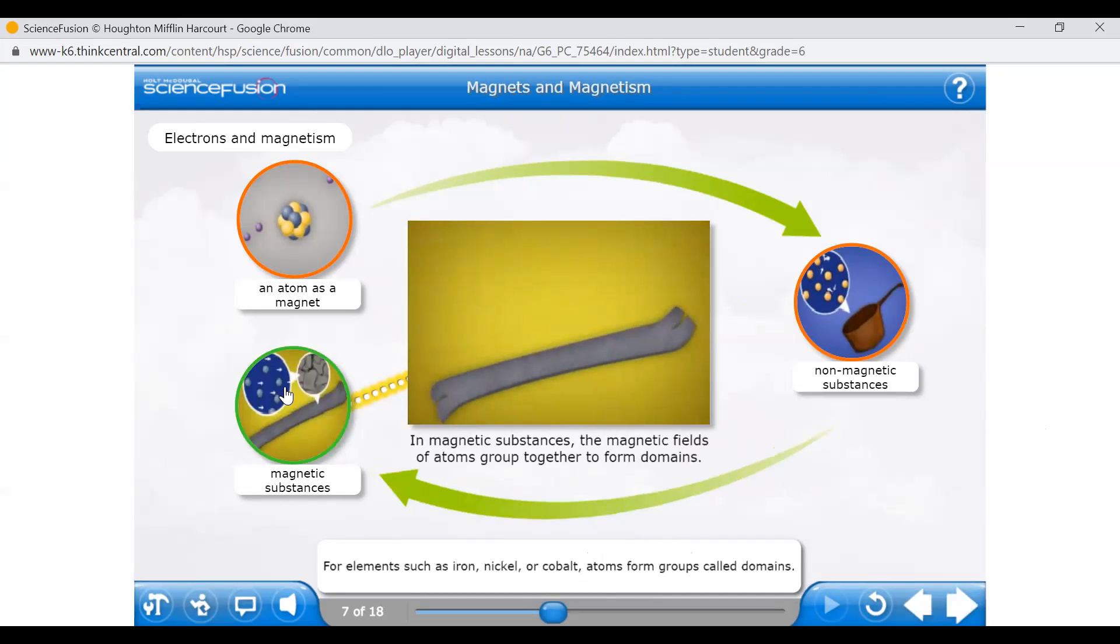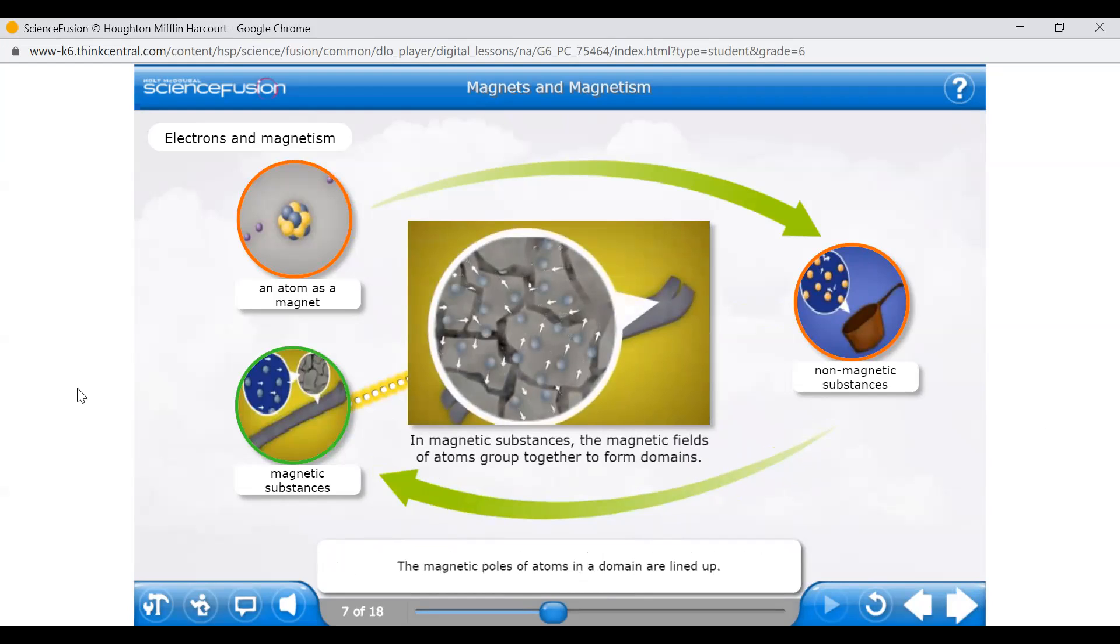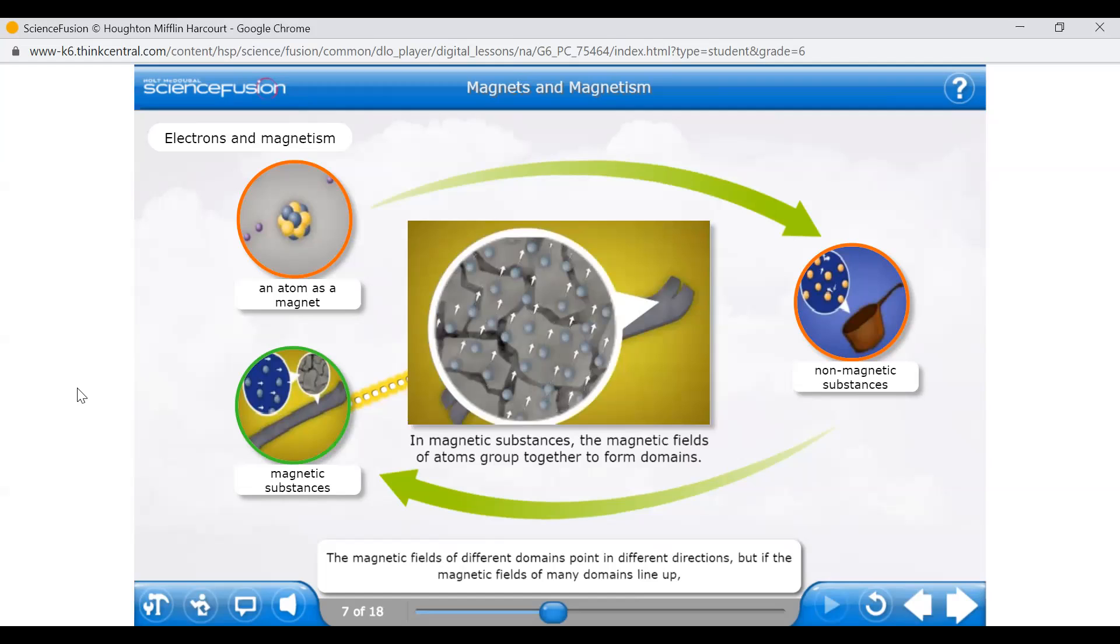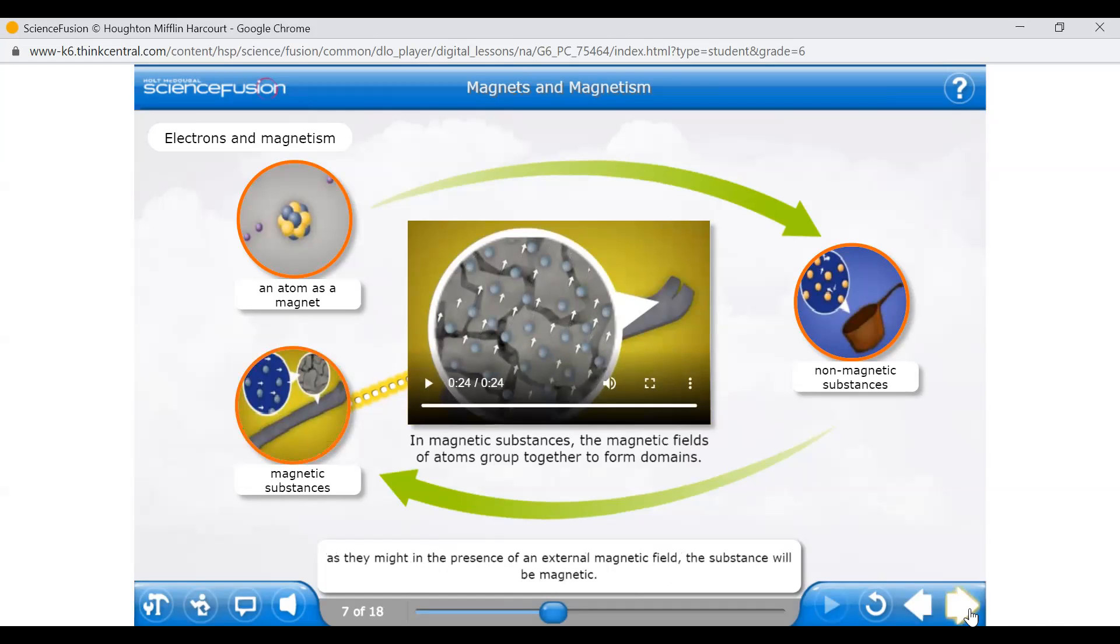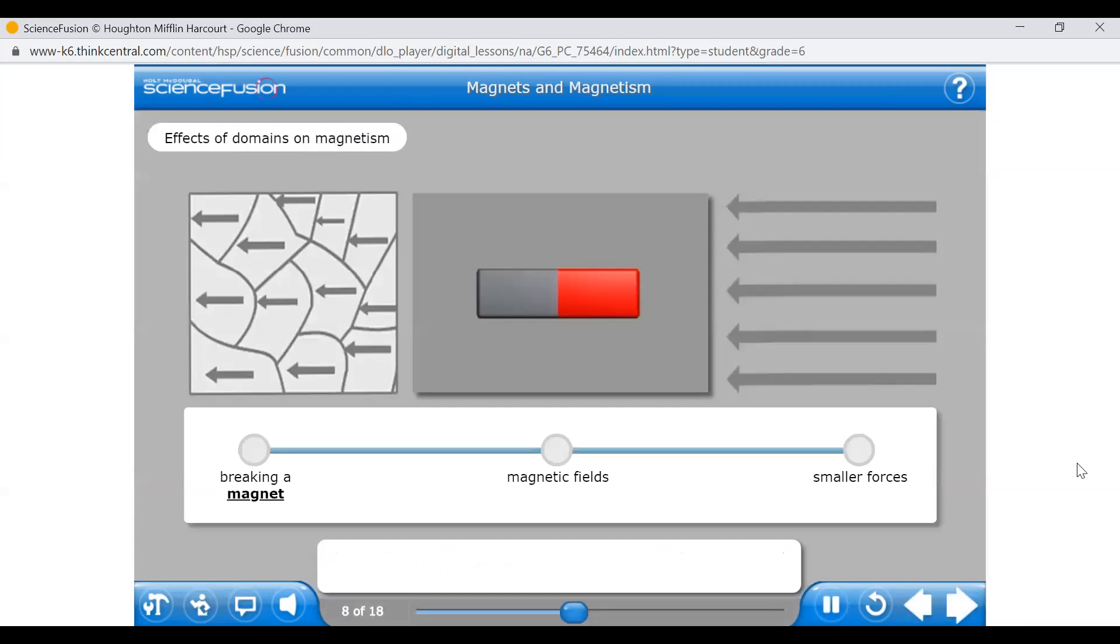For elements such as iron, nickel, or cobalt, atoms form groups called domains. The magnetic poles of atoms in a domain are lined up. The magnetic fields of different domains point in different directions, but if the magnetic fields of many domains line up, as they might in the presence of an external magnetic field, the substance will be magnetic. You've now learned about domains and how they make certain substances magnetic, such as iron, cobalt, and nickel. Now you're ready to see how domains are related to some of the properties of magnets. Click the dots on the line to find out more.